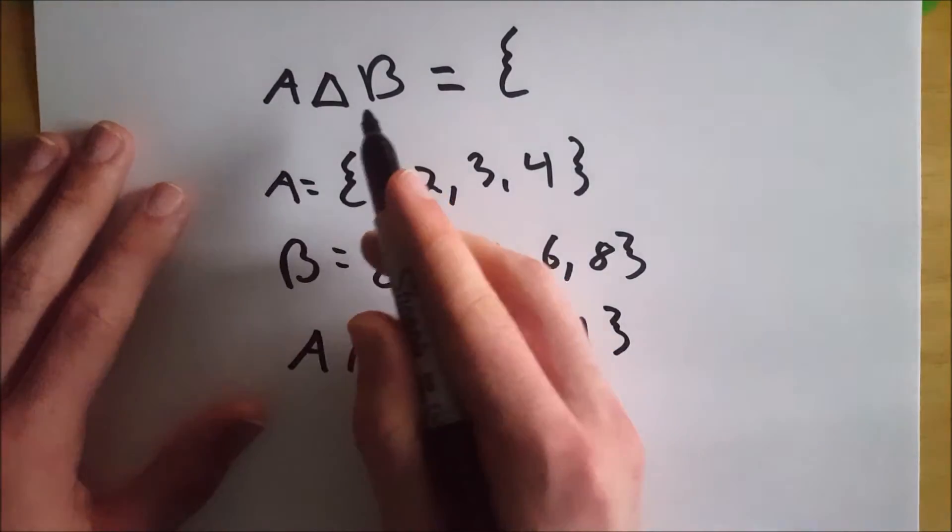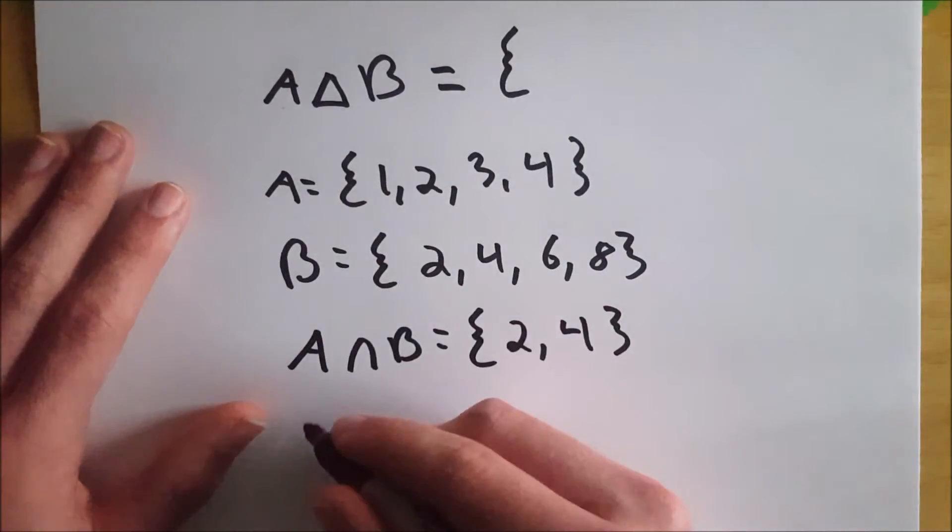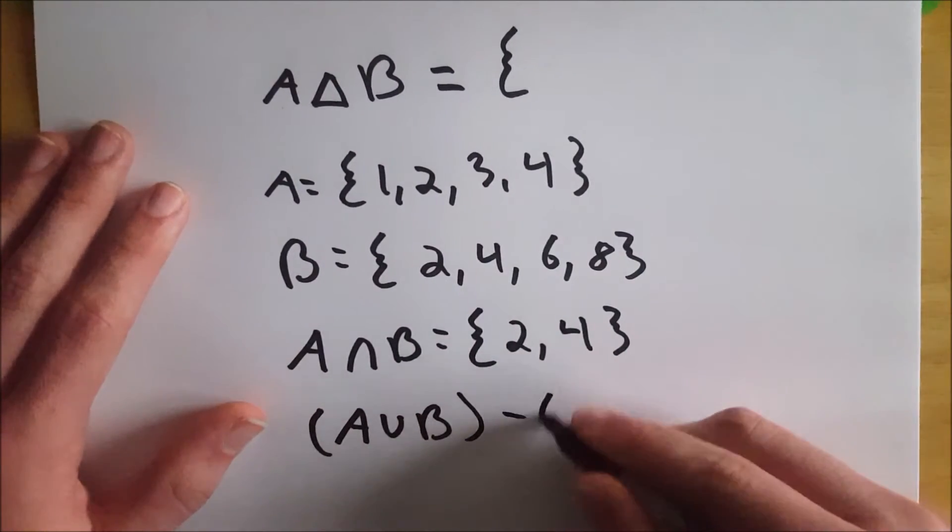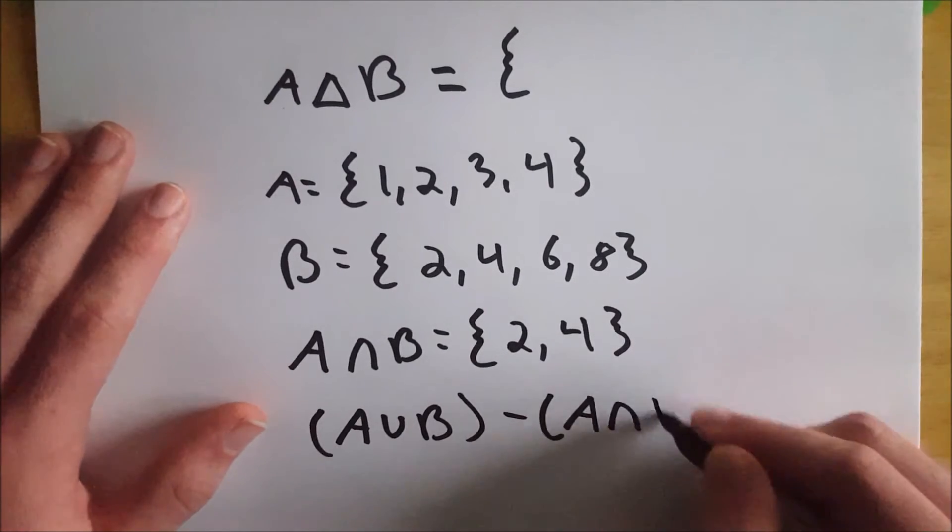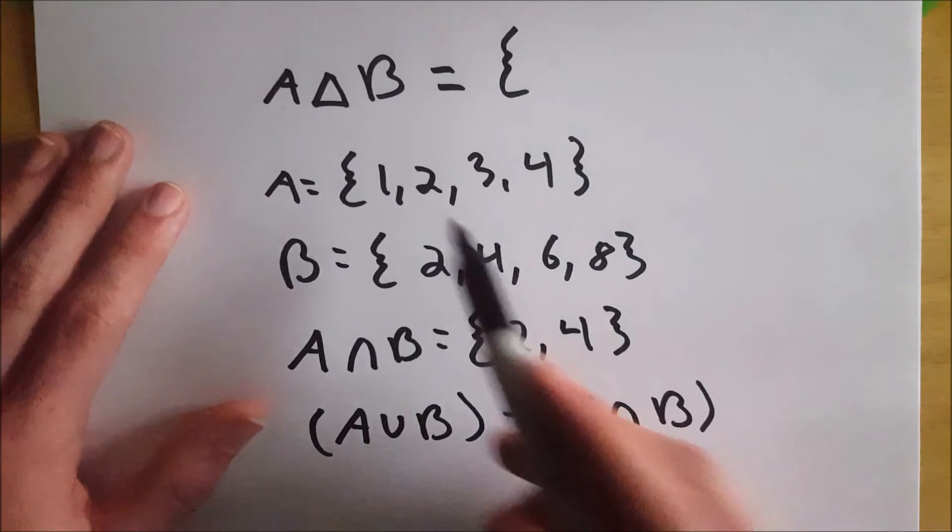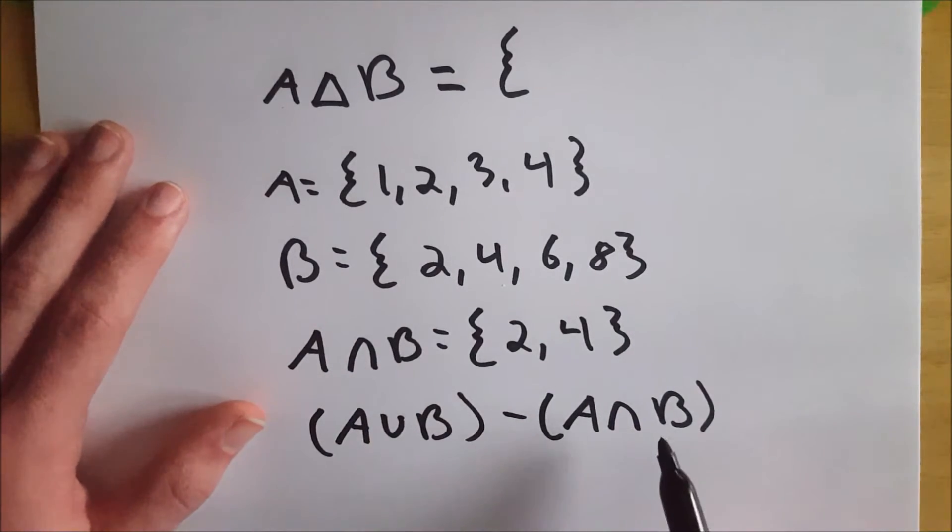So another way you can write the symmetric difference of two sets is A union B minus A intersect B. So A union B, of course, is just going to be all elements in both sets, and then we take away the intersection, which is the stuff they have in common.